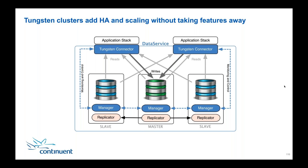A question has come in: where does the replicator run — on master or slave? The replicator runs on both the master and the slaves. There is a replicator running on every MySQL server within the cluster. If it's a master, it extracts data; if it's a slave, it applies data. In the event that configuration changes — say a master switch — those roles change accordingly, and the replicator will now extract data from the binary logs while the other replicators apply it.